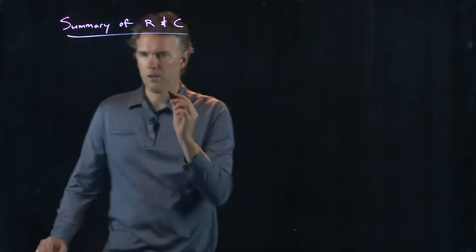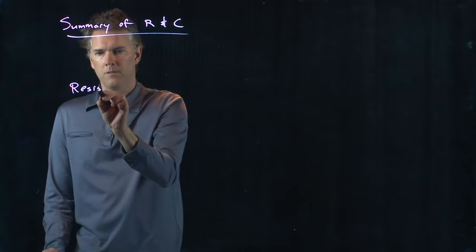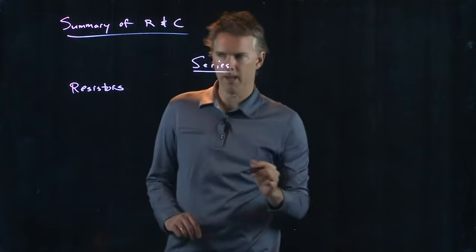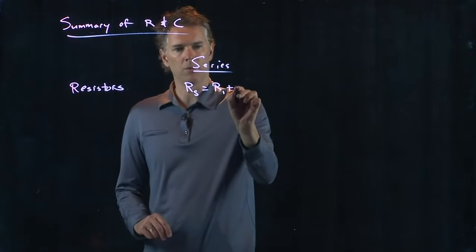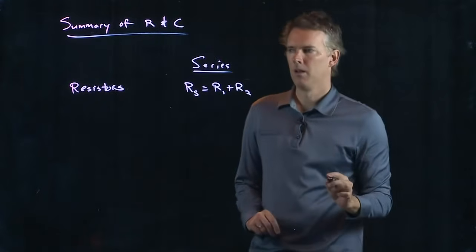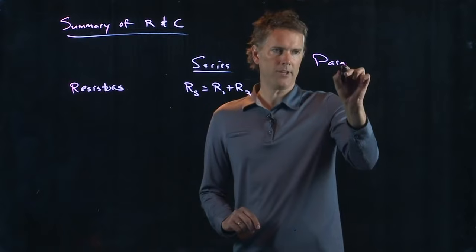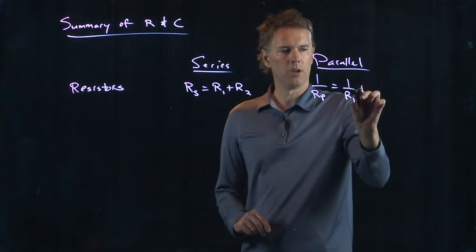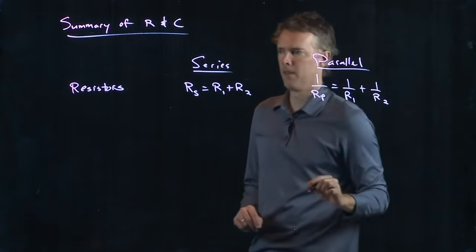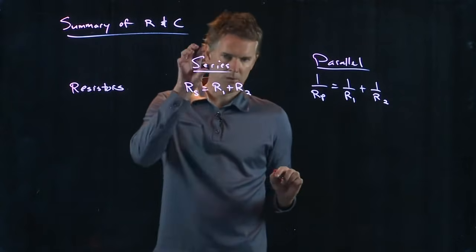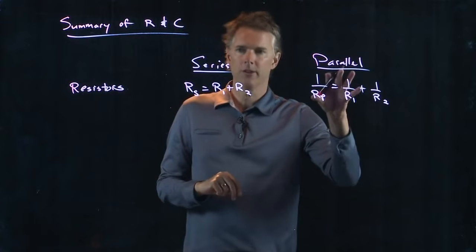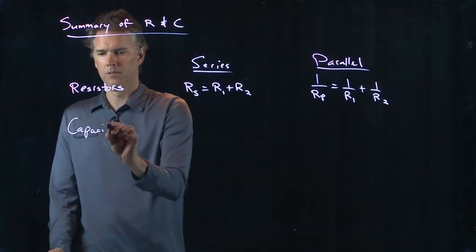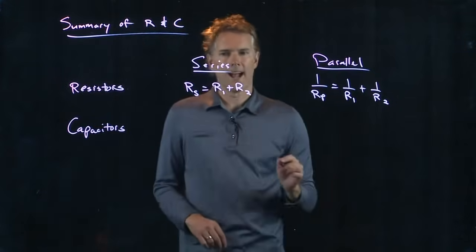So, the resistors in series we know how they behave. R sub S equals R1 plus R2. Piece of cake. But in parallel, we have to add their inverses. 1 over Rp equals 1 over R1 plus 1 over R2. Here we added resistances. Here we, in fact, added currents, and that led to the inverse of the resistor. For capacitors, we have exactly the opposite.